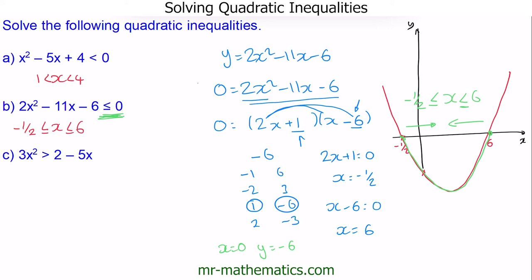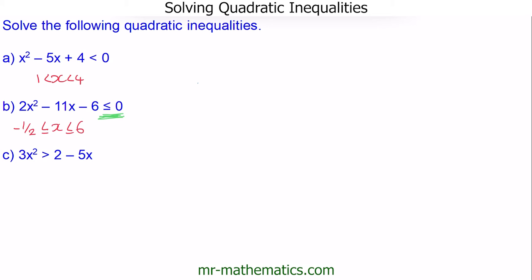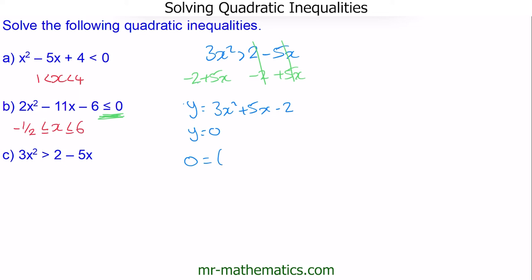Let's move on to question C, which is a little more difficult. We're going to write this inequality with the right hand side equal to 0. To do this, I'm going to subtract 2 and add 5x to both sides. So now we have y equal to 3x squared plus 5x minus 2. We find the roots when y equals 0, and we factorize as (3x in one bracket)(x in the other). The numbers that multiply to make negative 2 are 1 and negative 2, or negative 1 and positive 2. Multiplying positive 2 by 3 gives 6, then subtracting 1 gives positive 5. So our roots are x equals one third and x equals negative 2.